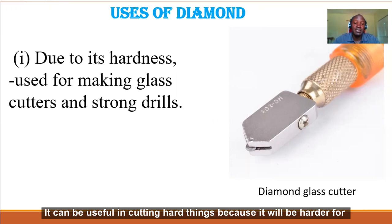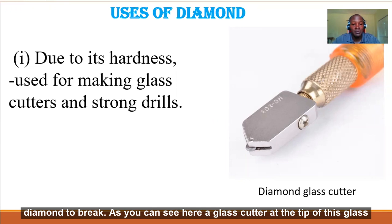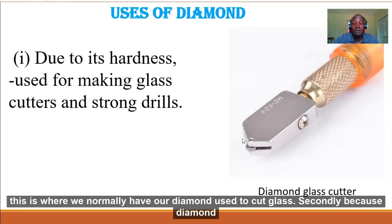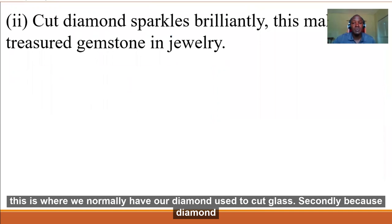Because it is hard, it can be useful in cutting hard things because it will be harder for diamond to break. As you can see a glass cutter, at the tip of this glass cutter, this is where we normally have our diamond used to cut glass.